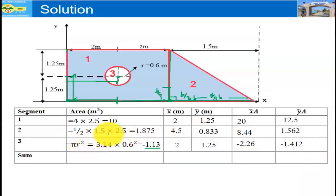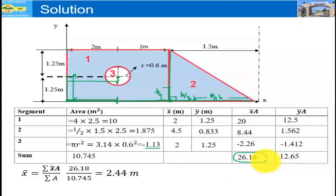Sum the area and this column. Summation of the area is 10.745 meter square. Don't forget to subtract this from this when you are adding. Summation of x tilde times area is 26.18. Summation of y tilde times area is 12.65. X bar or centroid in the x direction is equal to summation of x tilde times area divided by summation of area. X tilde is 26.18 divided by summation of area 10.745, and this is 2.44 meter.